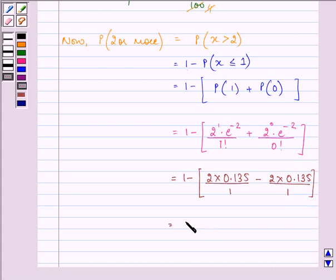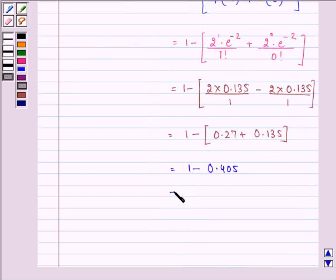That is further equal to 1 minus, its value after multiplying is 0.27 plus 0.135. We have after simplifying 1 minus 0.405 which is further equal to 0.595.